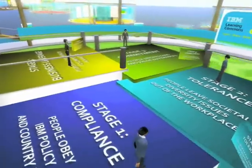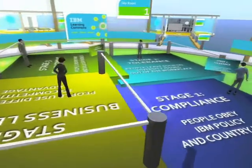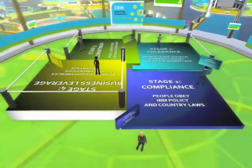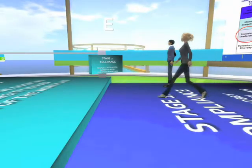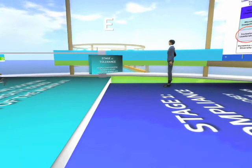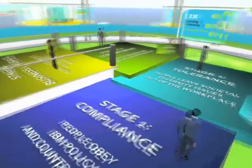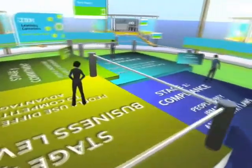Next, participants are introduced to a model which examines the four progressive stages leading to a diverse environment. Participants assess the teams they lead or are a part of by standing on the step that best represents the stage of their team. This 3D representation of the model teaches leaders to move through the stages as they learn to value diversity, compliance, tolerance, commitment, and business leverage.